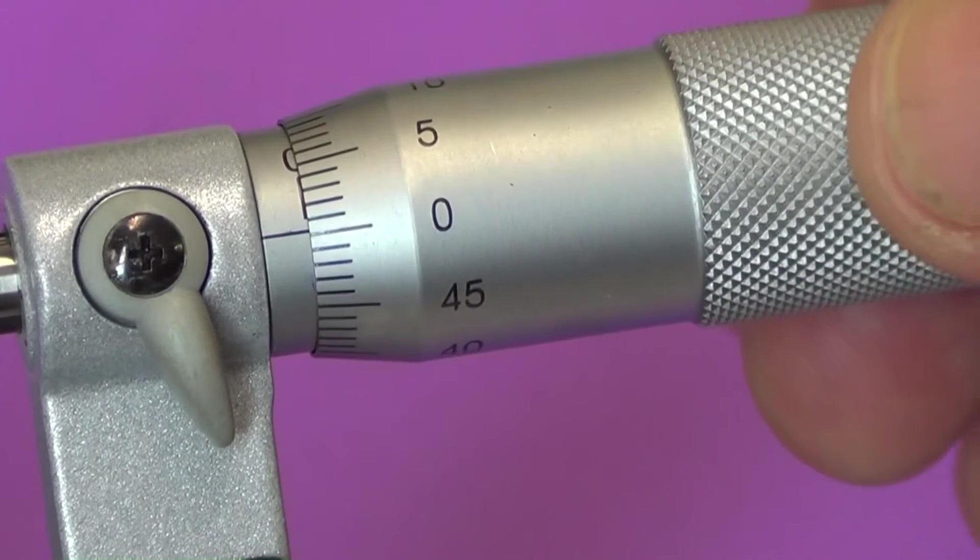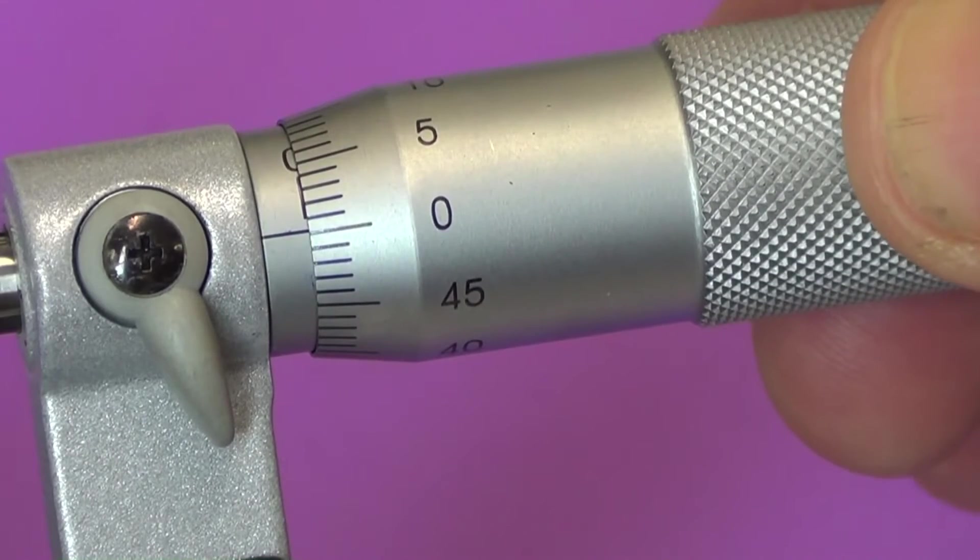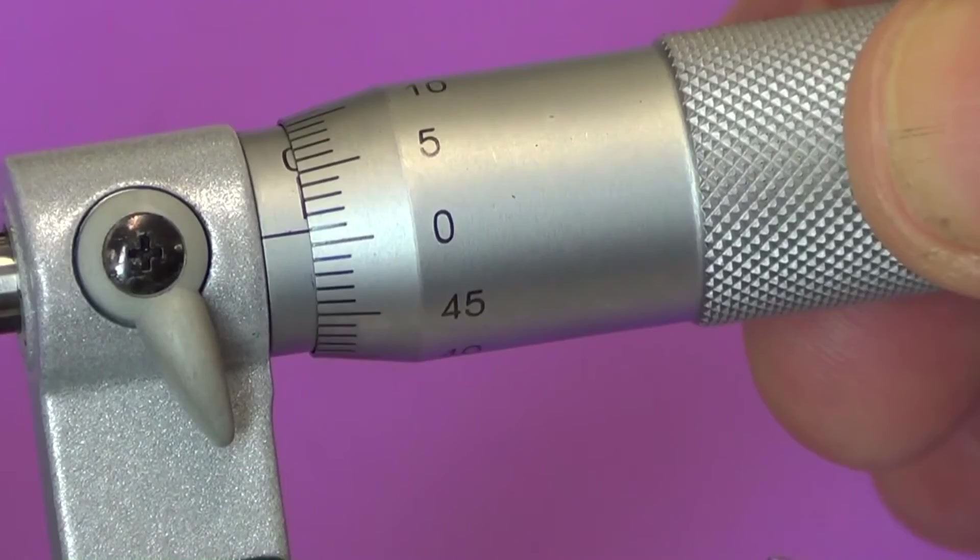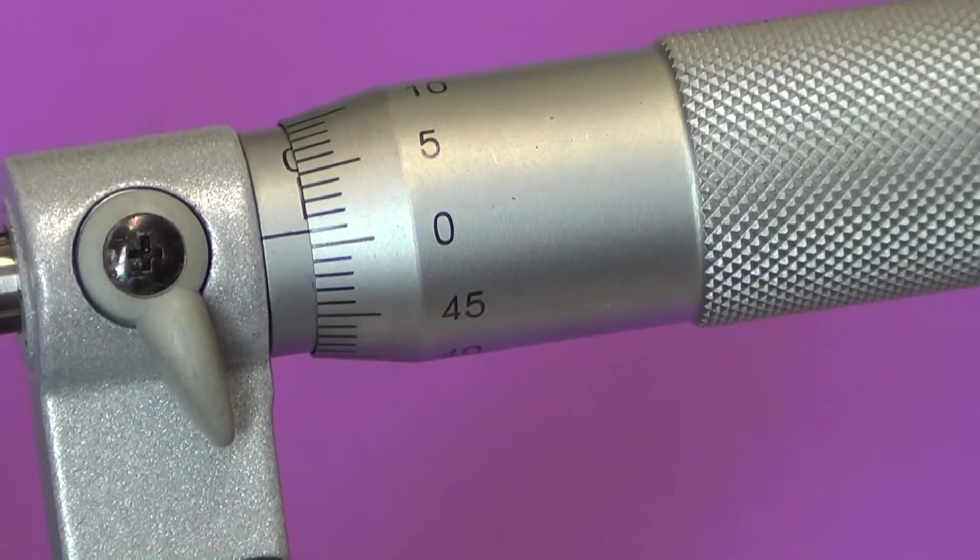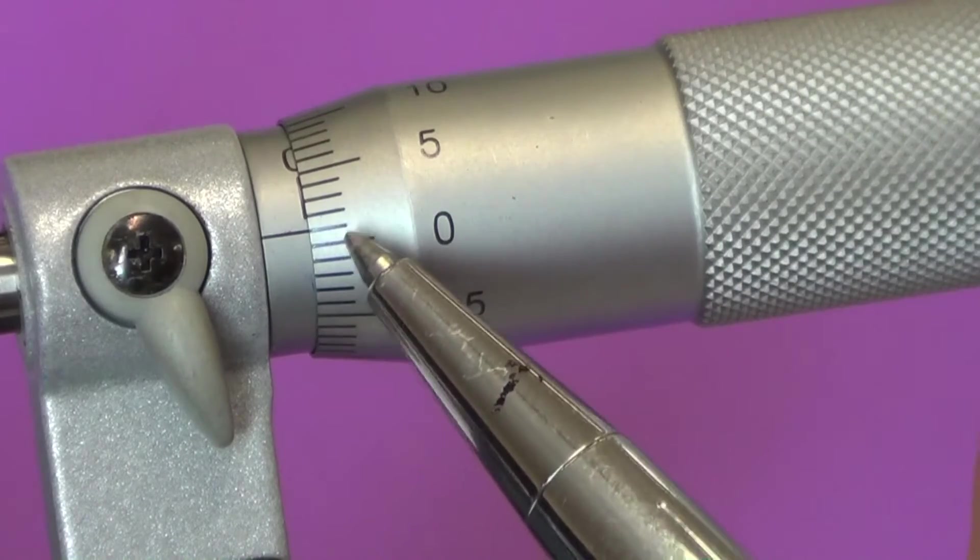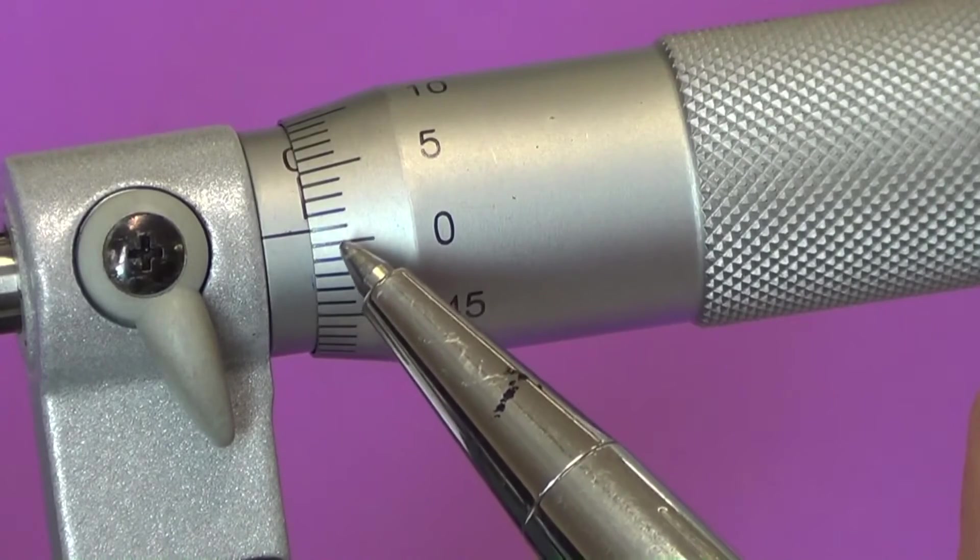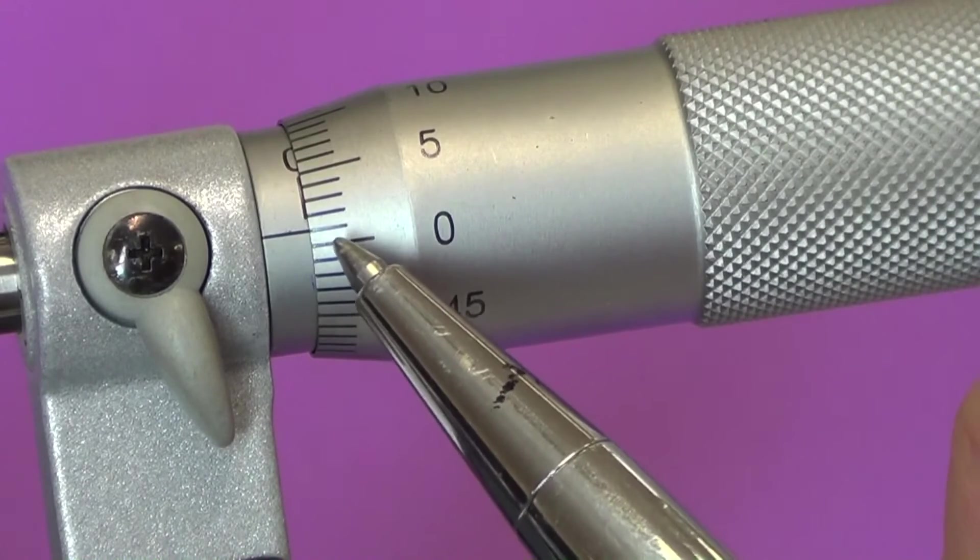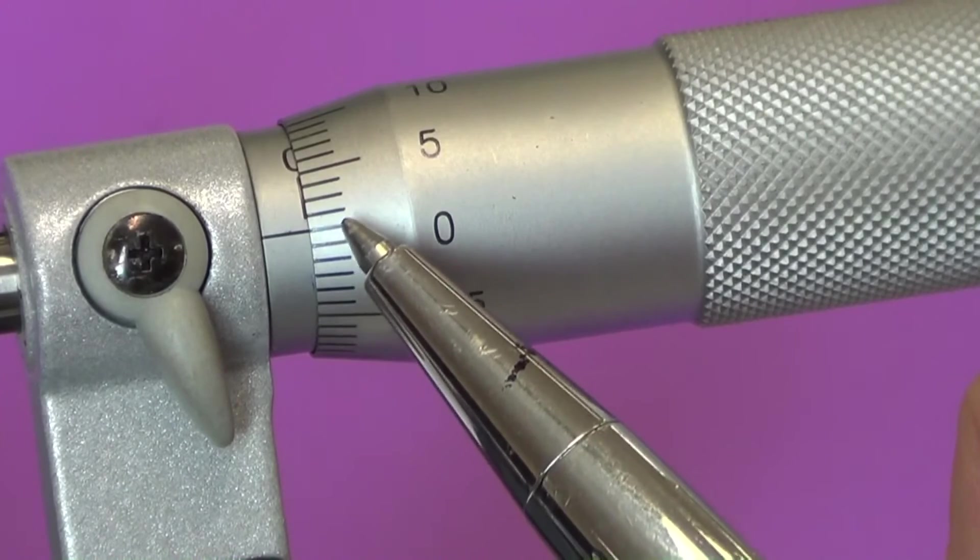The zero matches up with the longitudinal line, the reference line. If we turn the thimble around, that's one division we have moved the thimble, the anvils have moved apart a distance of one hundredth of a millimeter.